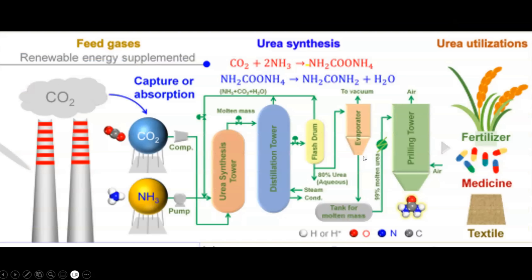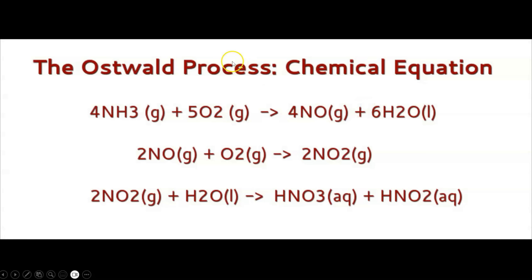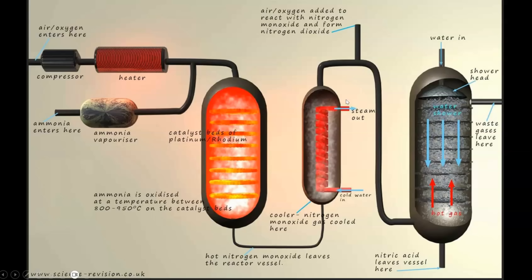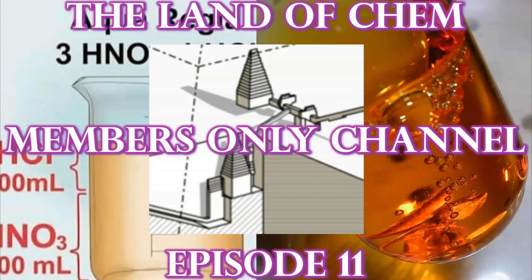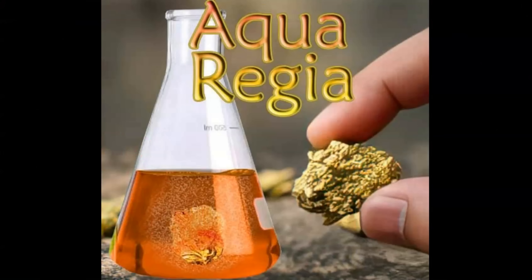I'll be returning to the alternative products of the Bent Pyramid, specifically urea, and to my second hypothesis regarding the function of the Bent Pyramid — that the ammonia was being converted into nitric acid in a series of reactions that resemble our modern-day Oswald process, as explained recently in Members Only Episode 11. The primary application for the nitric acid being the production of aqua regia, a solution that can be utilized for the extraction and processing of gold.